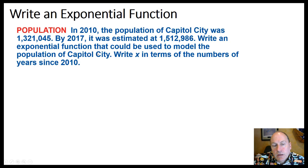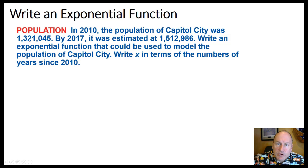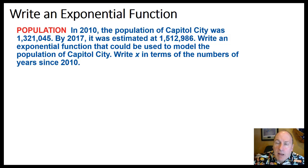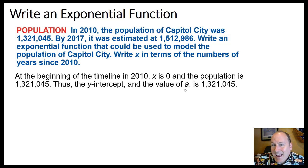Populations are a great example of something modeled with exponential functions. Let's look at Capital City — the capital of the state Springfield is in from the Simpsons. In 2010, the population was estimated at 1,321,045, and by 2017 it was 1,512,986. We'll create an exponential model using x as the number of years since 2010. At x equals 0, the y-intercept is 1,321,045, which is the value of a in the model y equals a times b to the x.